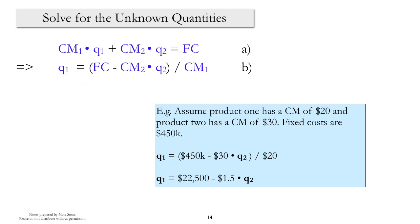And we can see this by looking at the numerical example as well. Once we plug in the numbers that we know, the fixed costs and the contribution margins per unit for each of the two products, what we end up with is Q1 equal to $22,500 minus 1.5 times Q2.